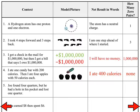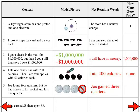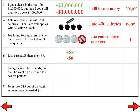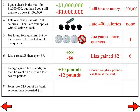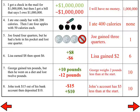Number five: Joe found four quarters, but he had a hole in his pocket and lost one quarter. The net result is that Joe gained three more quarters than what he started with, and there would be one zero pair. Number six: Lisa earned $8, then spent $6. Her net result is she gained $2 altogether, and that would make six zero pairs. Number seven: George gained 10 pounds, but then went on a diet and lost 12 pounds. The net result is he's two pounds less than when he started, and that would be 10 zero pairs. Number eight: John took $15 out of his bank account and then deposited $10. The net result is that he has $5 less than at the start, and there are 10 zero pairs.